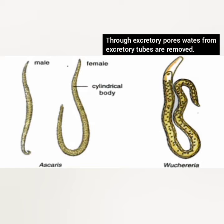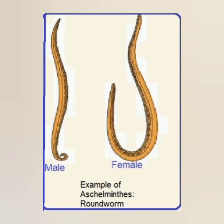Body waste is removed through the excretory pore. Sexes are separated — these organisms are dioecious — which means male and female are distinct. Often the females are longer than males, and fertilization is internal.